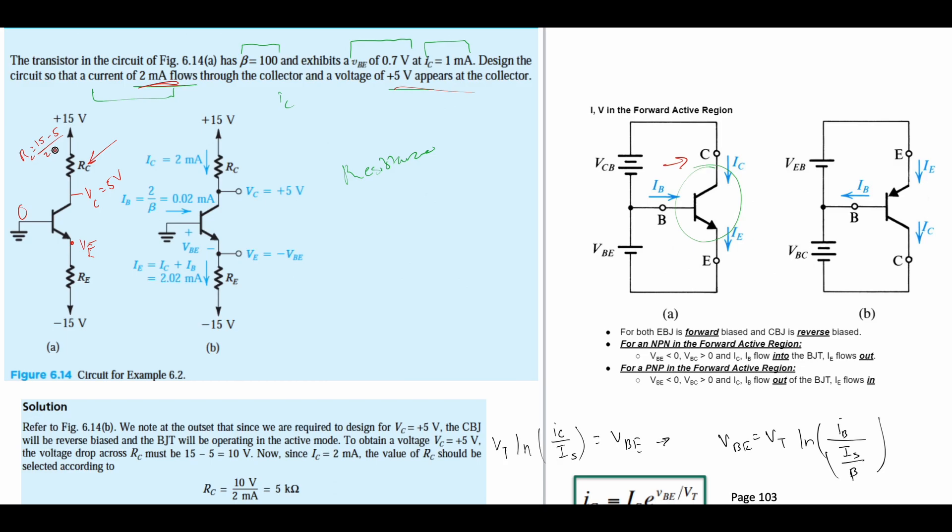So that's going to be 10 volts over 2 milliamps, which gives us a 5 kilo-ohm resistor. That's going to be our resistor value.